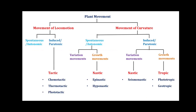Now let's see how plant movements are categorized. Movement is categorized into two types: locomotion movement and curvature movement. These are subcategorized into spontaneous or induced — autonomic or paratonic. In the movement of locomotion, the induced movement includes a tactic movement type, which may be chemotactic, thermotactic, or phototactic.